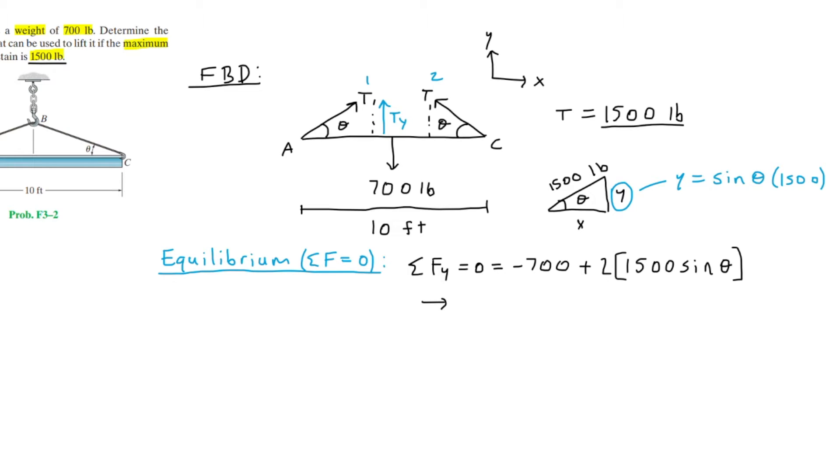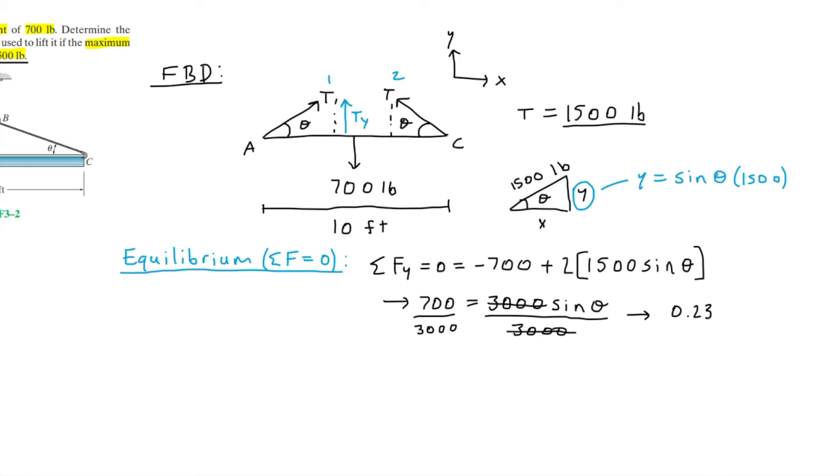Now rearranging and simplifying this, we have 700 equals 3000 sine of theta. Dividing the 3000 to the other side, this ends up being 0.233 equals sine theta.